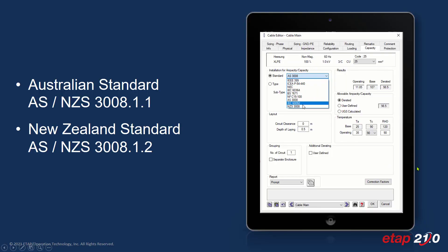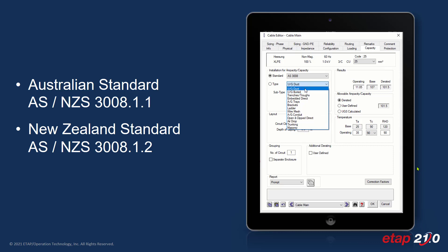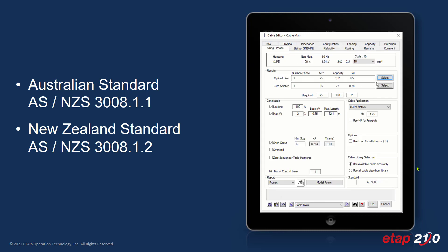For those familiar with the cable editor and cable sizing within ETAP, we can go right into the capacity page, select the applicable standard — whether that's Australia or New Zealand — select your installation type, and ETAP automatically calculates the derated values. You can change the size directly from the editor and view your new results, or from the sizing tab, select the optimal size provided or one size smaller.